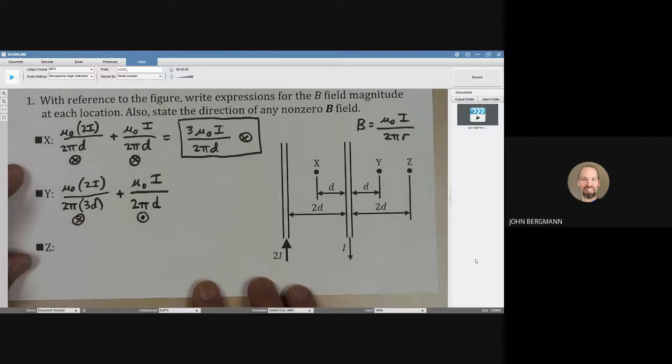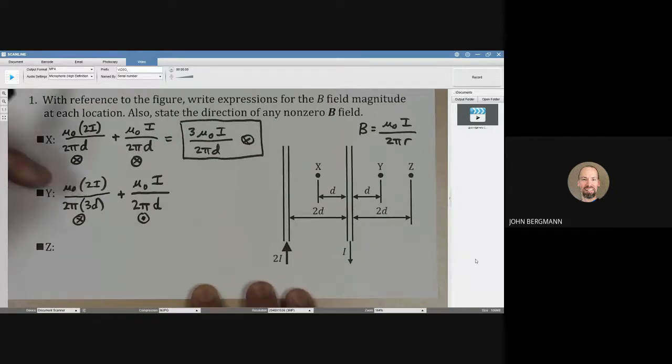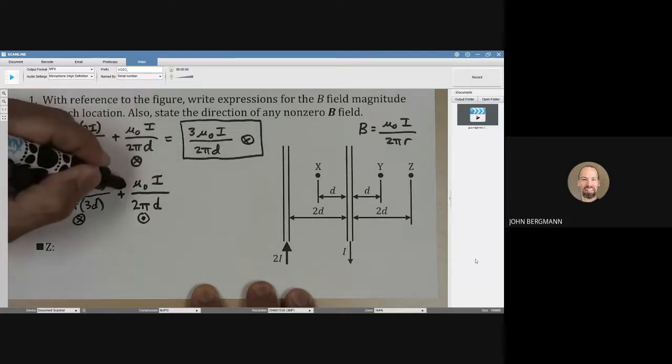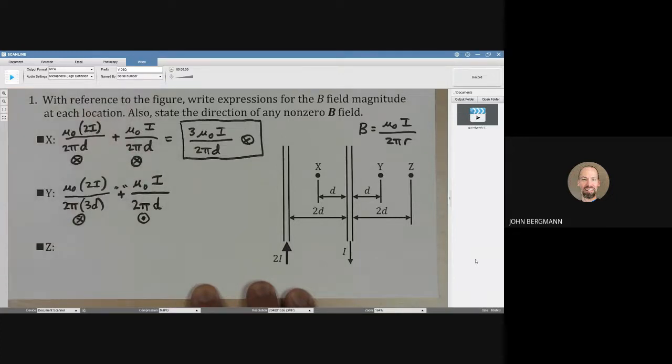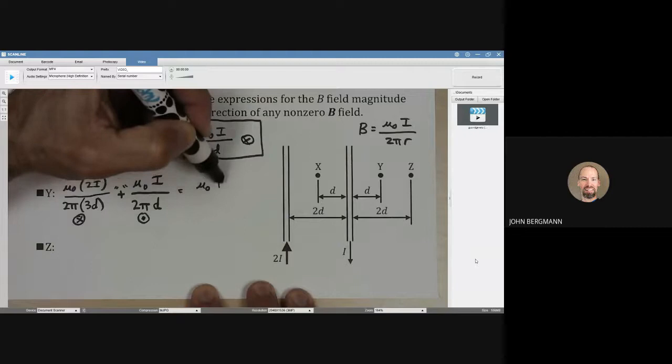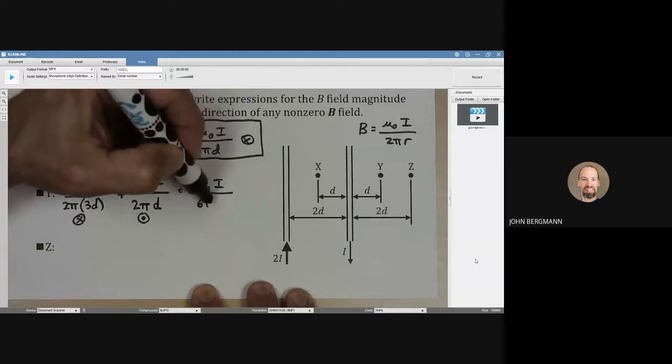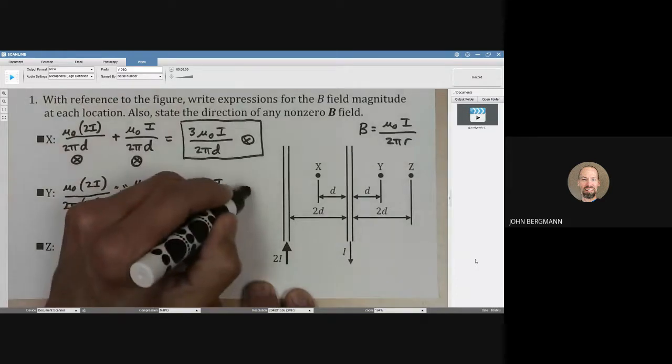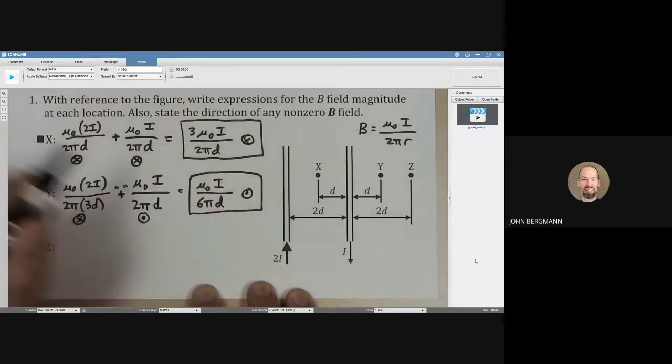We're going to have a subtractive effect. This looks to be one-third, and this looks to be one-half. I'll put that in quotes because those are pointing in the opposite direction. So that looks to me like one-sixth. I think we're going to go μ₀i over 6πd. And who wins here? The one-half is bigger, so that's going to be out of the page.